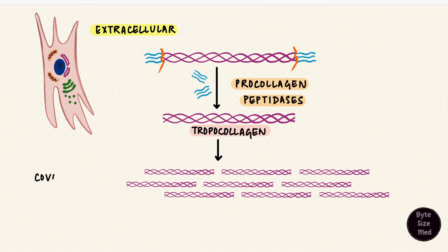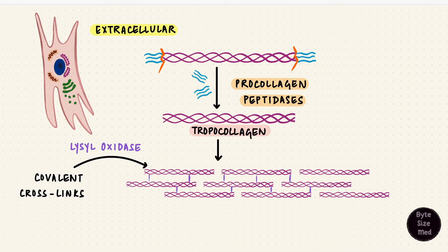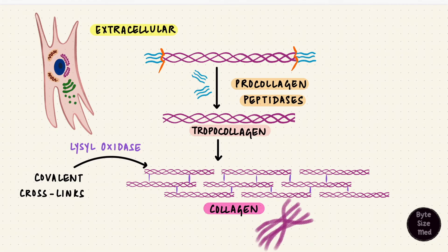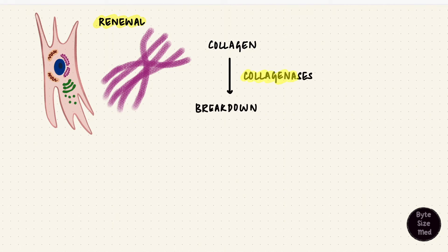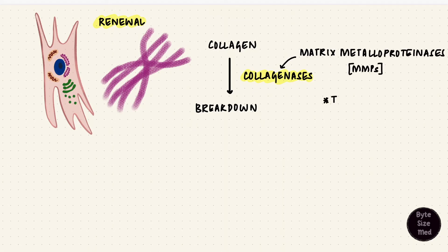The fibrils are still not completely stable yet. Covalent crosslinks form by the enzyme lysyl oxidase, which stabilizes collagen. This enzyme is copper dependent. Collagen then undergoes slow turnover in the body — in some areas like tendons it's more stable, but in other areas renewal happens, which is how tissue repair occurs. For that, collagen first gets broken down by collagenases, which are matrix metalloproteinases. They break collagen down into its protein components, and this group of enzymes is important during remodeling and tissue repair.